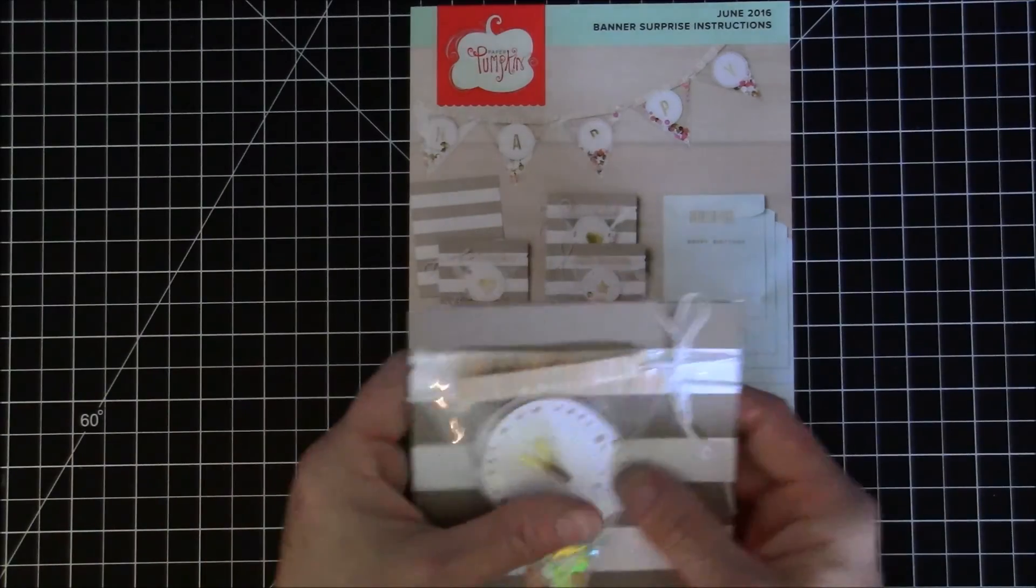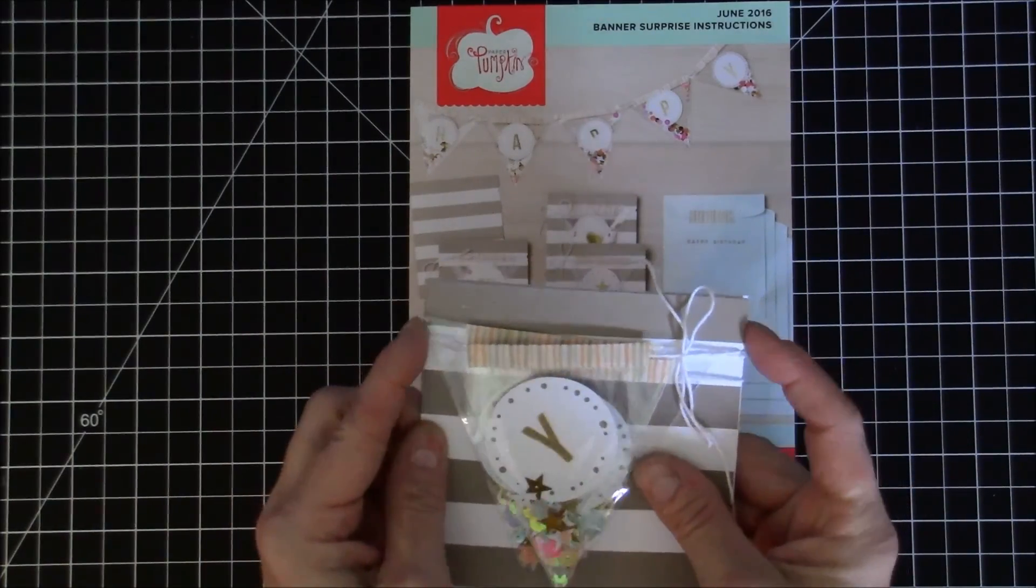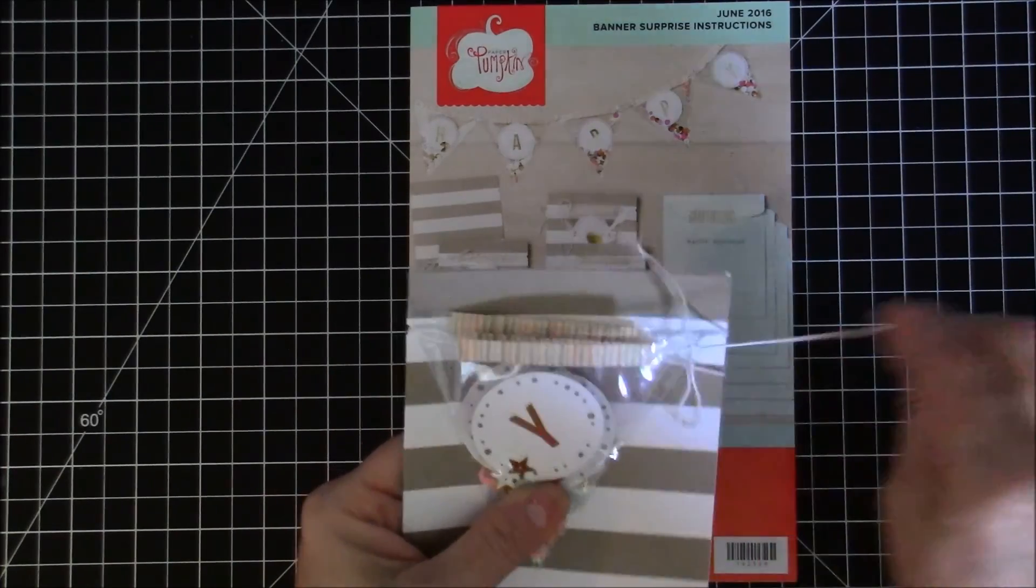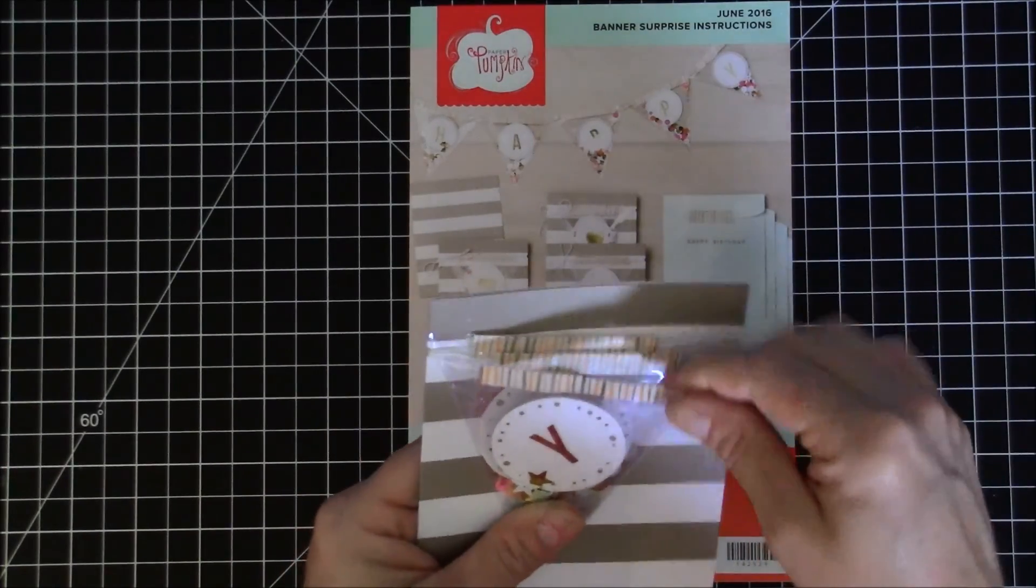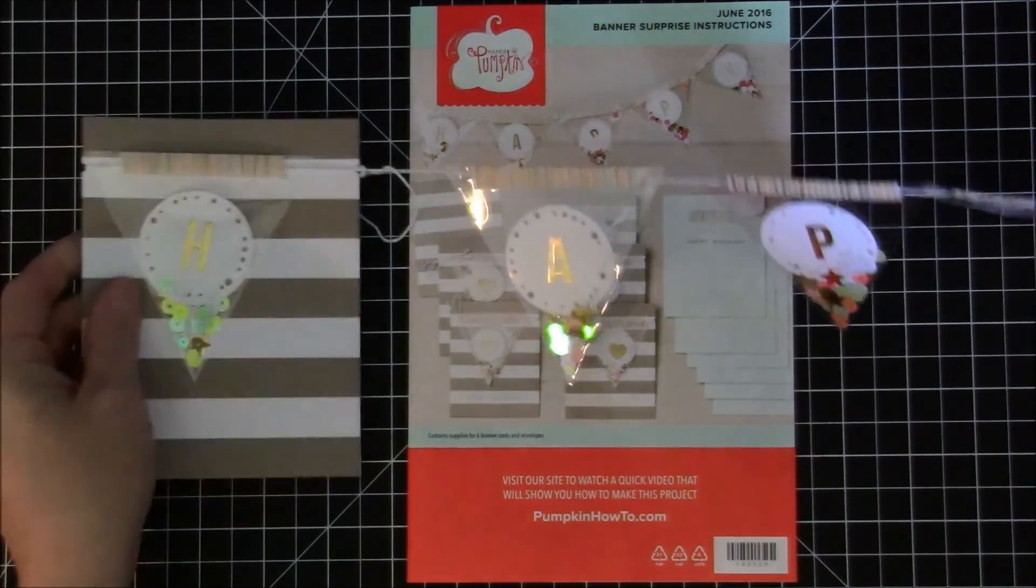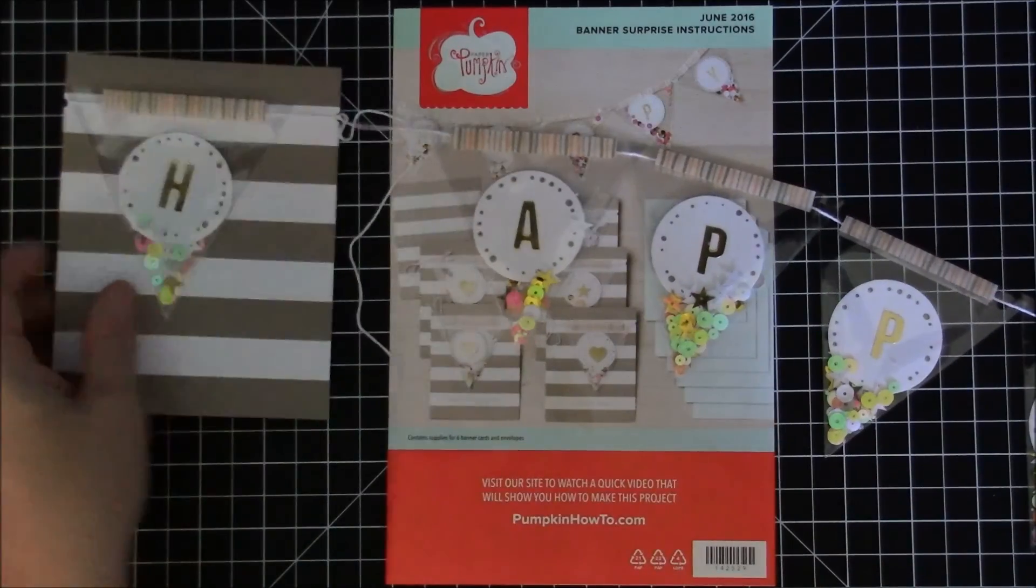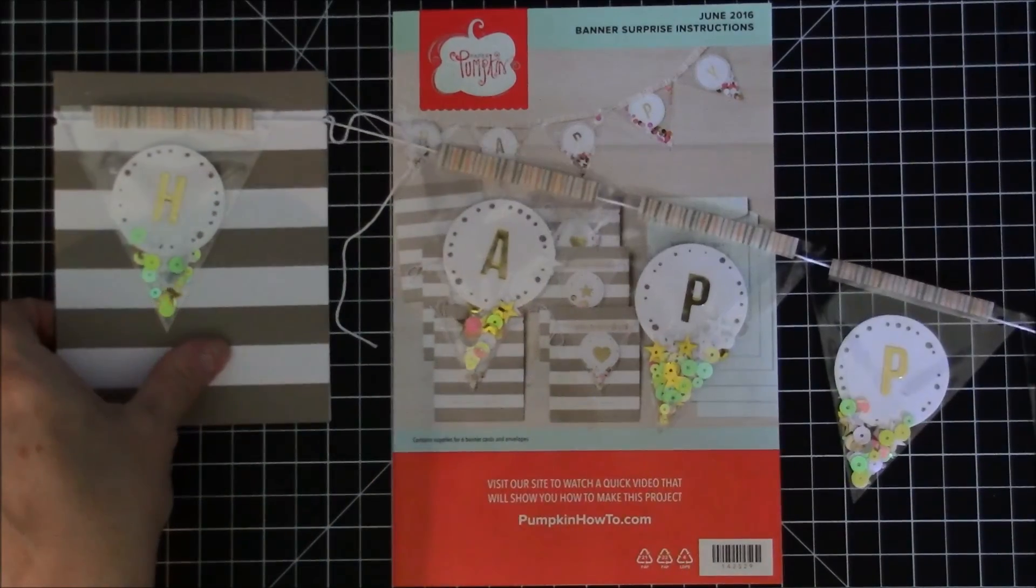So I made one of the cards with the banner and what I did for mine is I tied mine onto the card base. As you untie it and pull the banner off the card, you will have your happy birthday banner that can be seen, and then they can open up the card to read the sentiment.